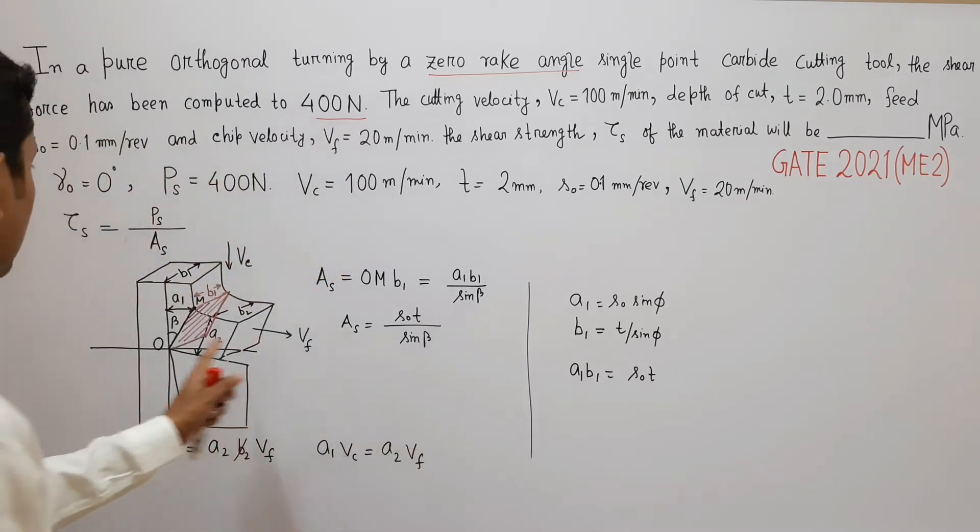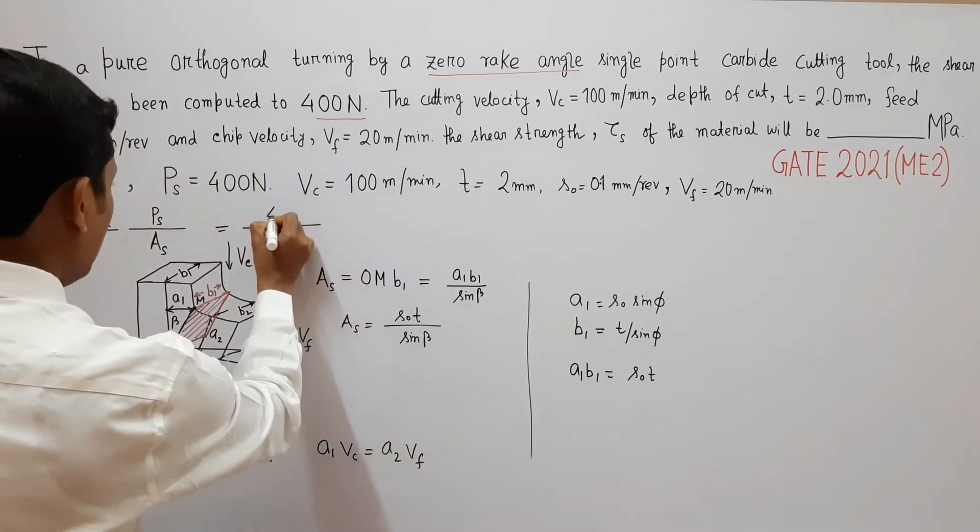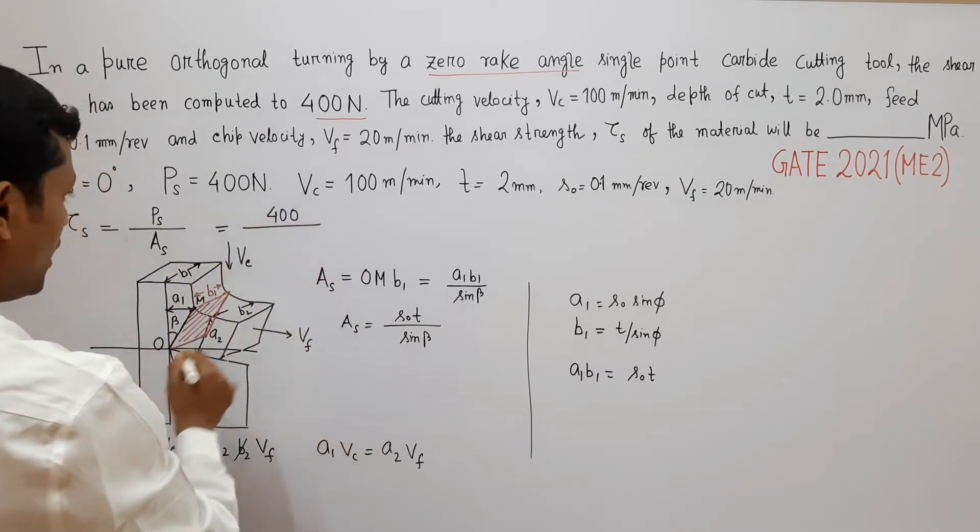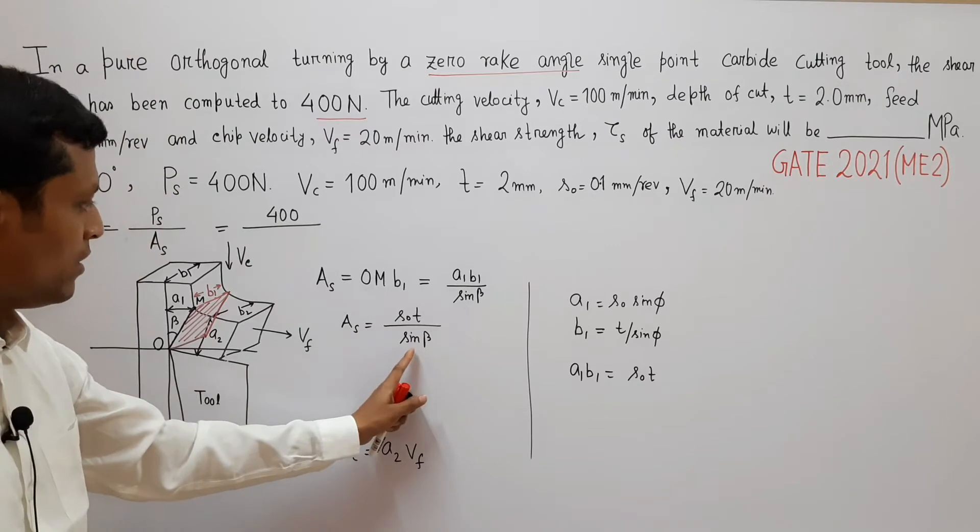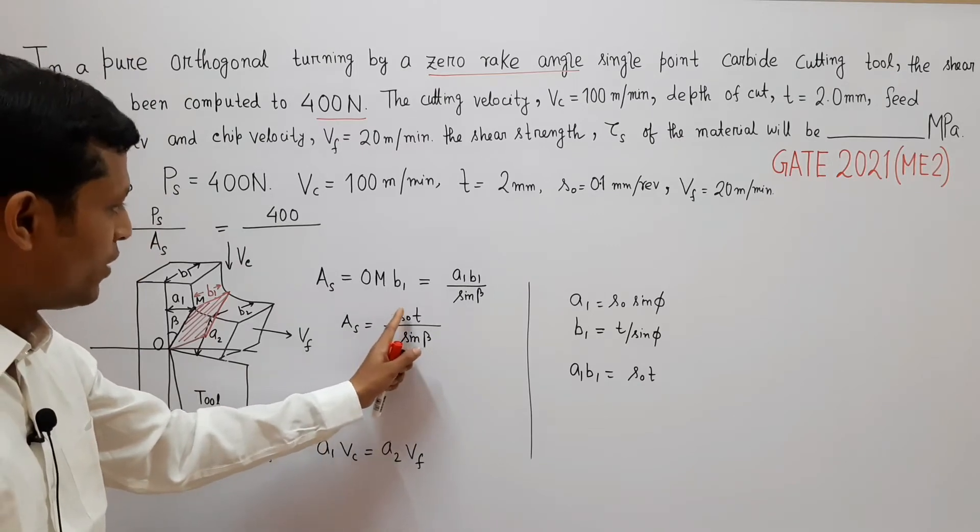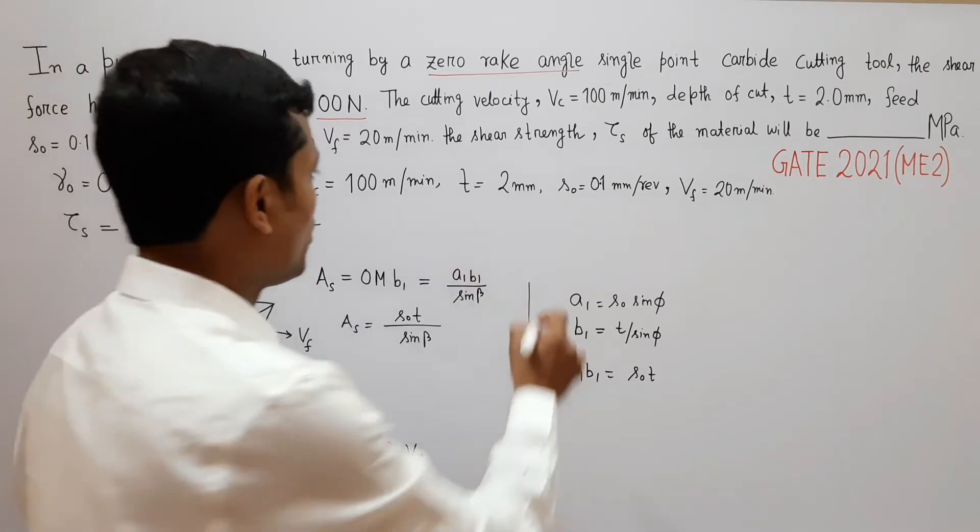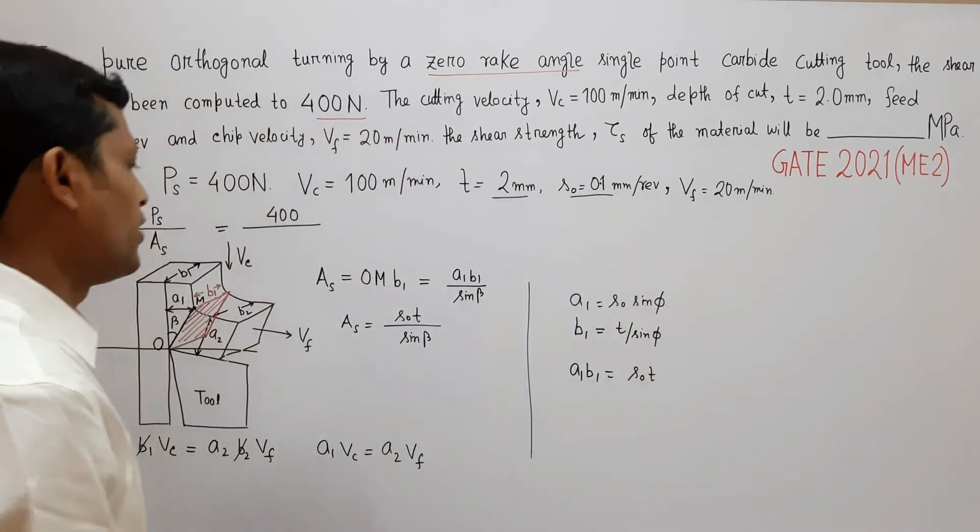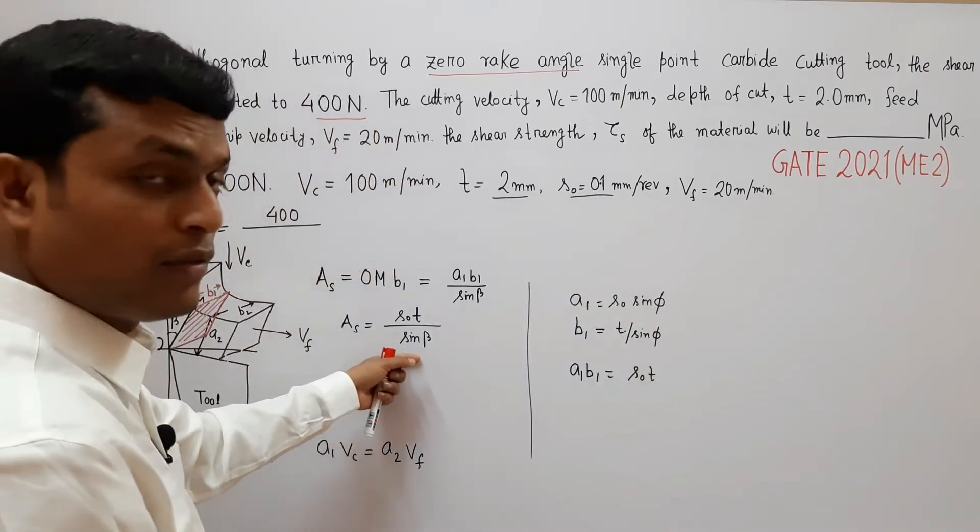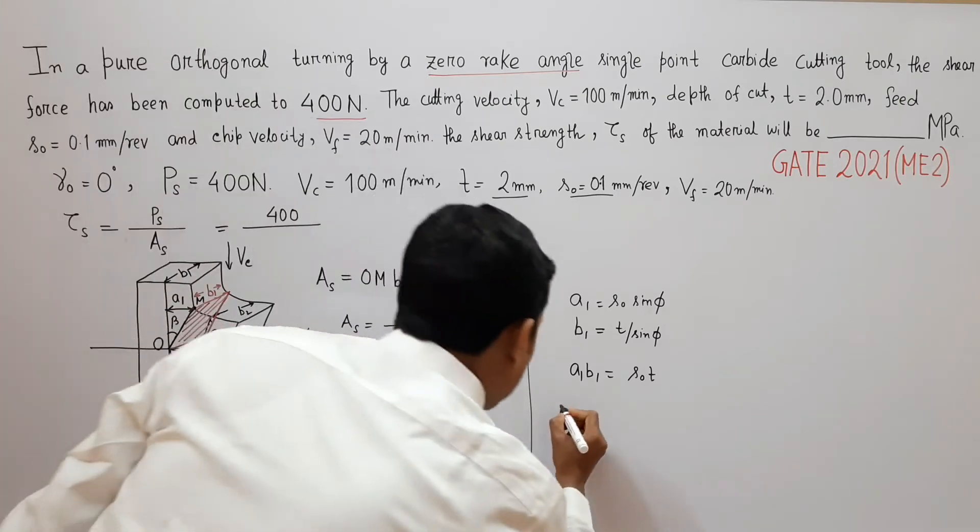Now tau_s is what? P_s is 400, A_s is S0·T·sine beta. Now we know value of S0 and T that is given in the problem. T is 2 millimeter, S0 is 0.1 mm per revolution. Only beta value is unknown. So how to determine beta?